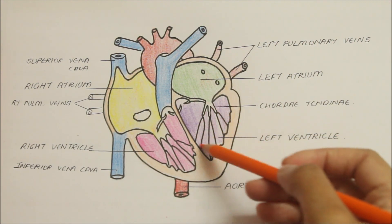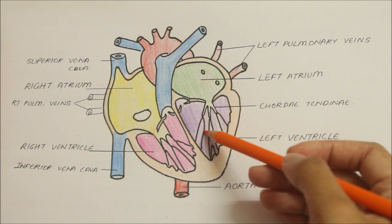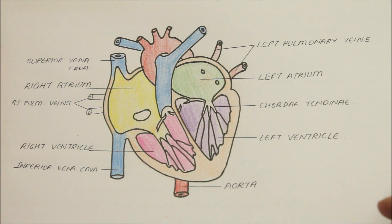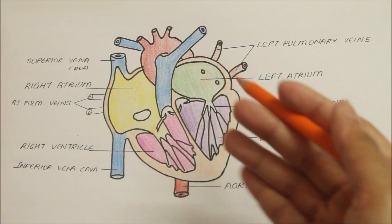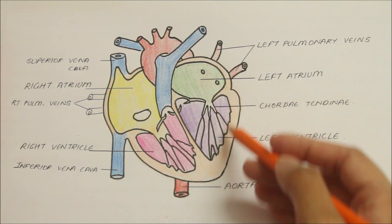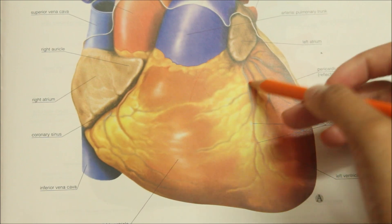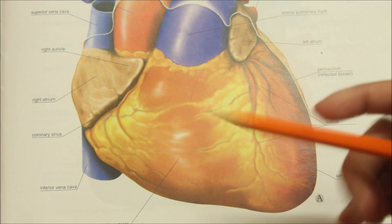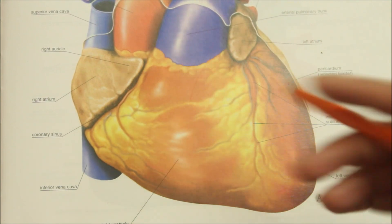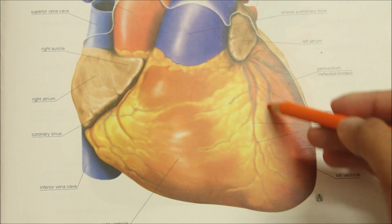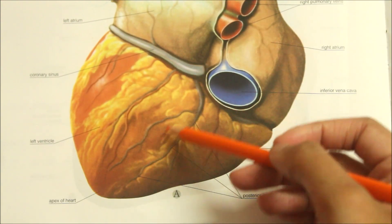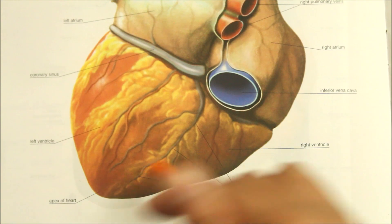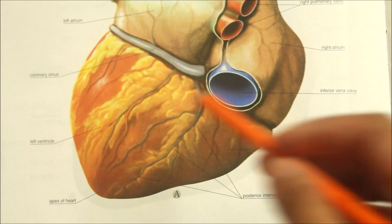Looking at the features of the left ventricle: externally, the left ventricle has three surfaces — the anterior or sternocostal surface, the inferior or diaphragmatic surface, and the left surface, as seen in both the anterior and posterior views of the heart.